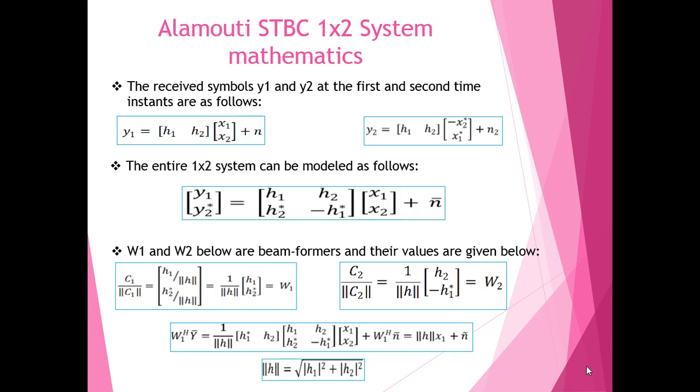In the second time instant, the symbol Y2 is received, assuming that the channel matrix hasn't changed at all, and is equal to the product of the channel matrix with the transmitted symbols of the Alamouti scheme. This is again added to the noise. The transmitting symbols of the Alamouti scheme are shown in the equation beginning with Y2. So the entire 1x2 system using the Alamouti STBC is modeled as shown, where the symbols have their usual meanings and this modeling is done for two different time instants.